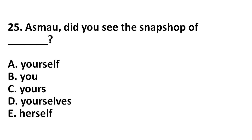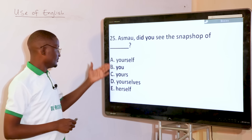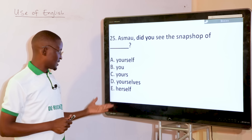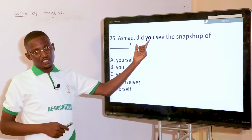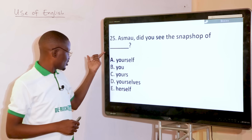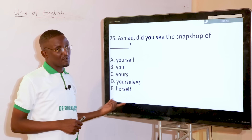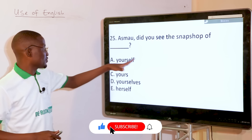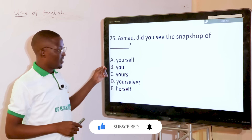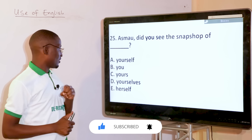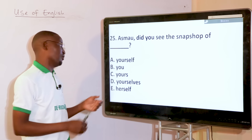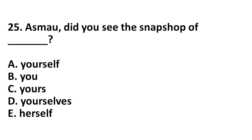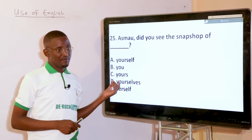As Mau, did you see the snapshot of dash? This is also on pronouns. Options: yourself, you, yours, yourself, herself. Since the determiner here involves you, it has to be something that goes with you — herself couldn't be an option. We choose between reflexive, possessive, or personal pronoun. It should be reflexive — like saying I saw myself in the mirror. So: did you see the snapshot of yourself? It should be reflexive rather than a possessive pronoun.